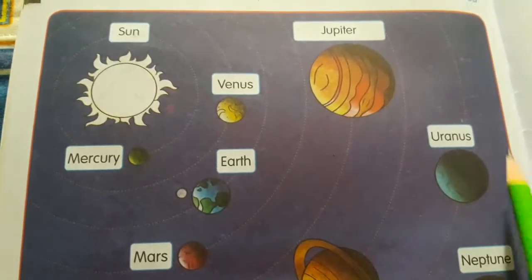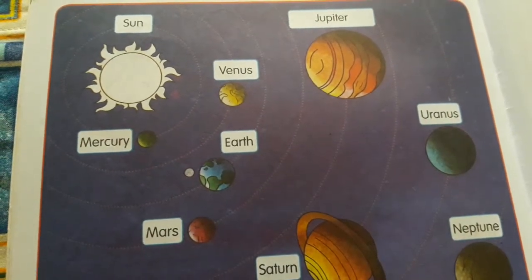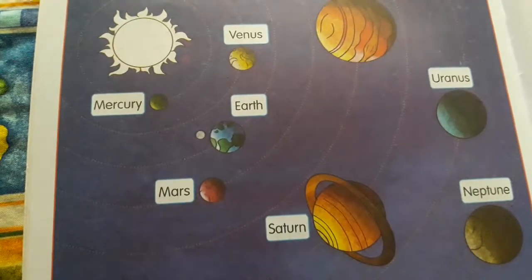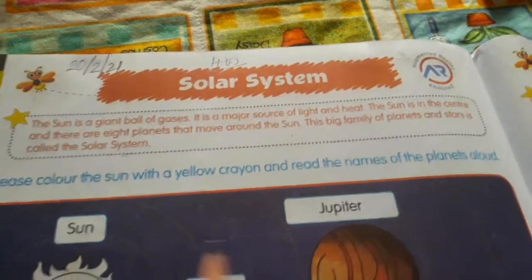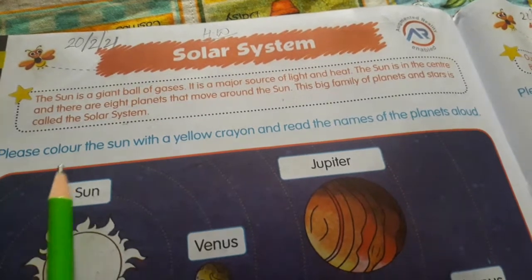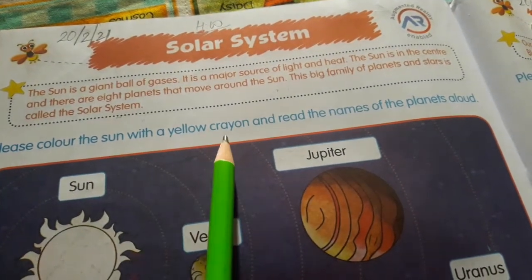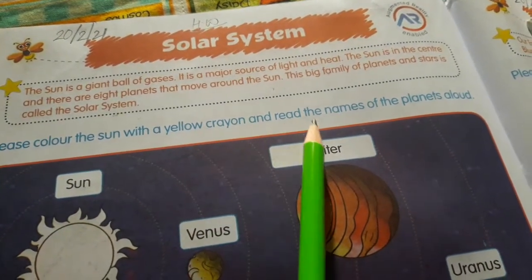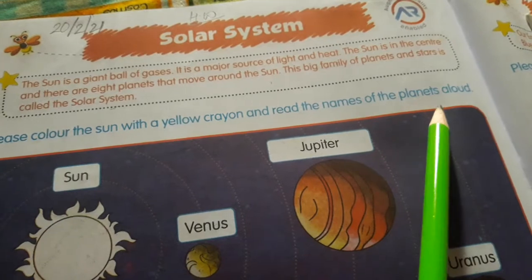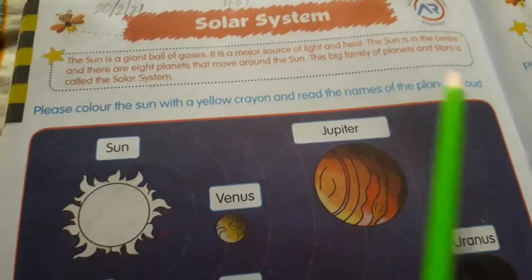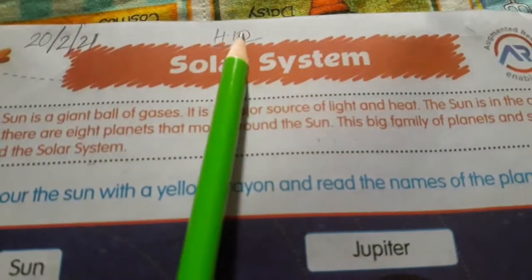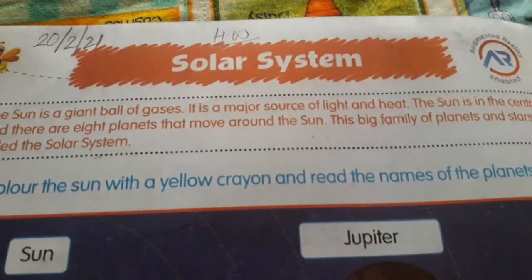Sabi bachche ko yeh sare names learn karne hain. Please color the sun with a yellow crayon and read the names of the planets around. Yeh aapka homework hai. Next, page number 53.